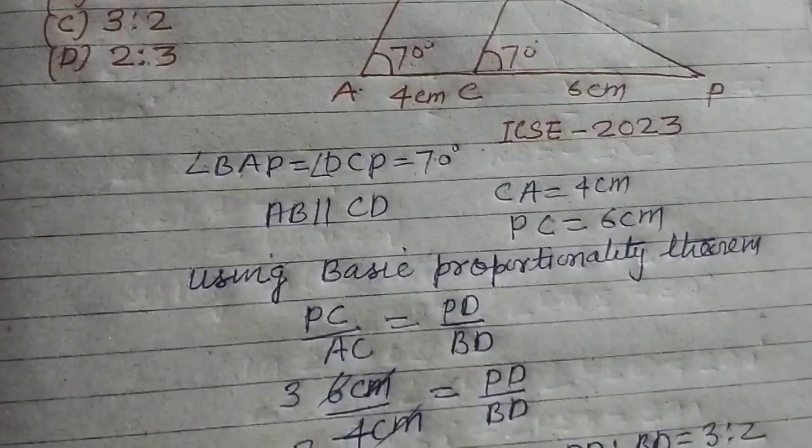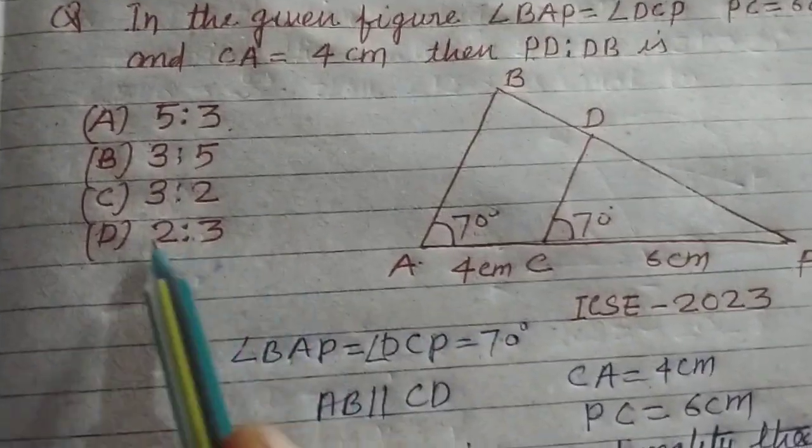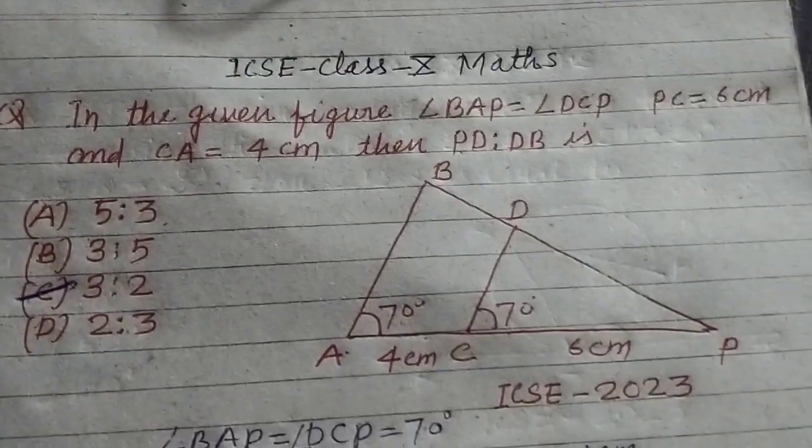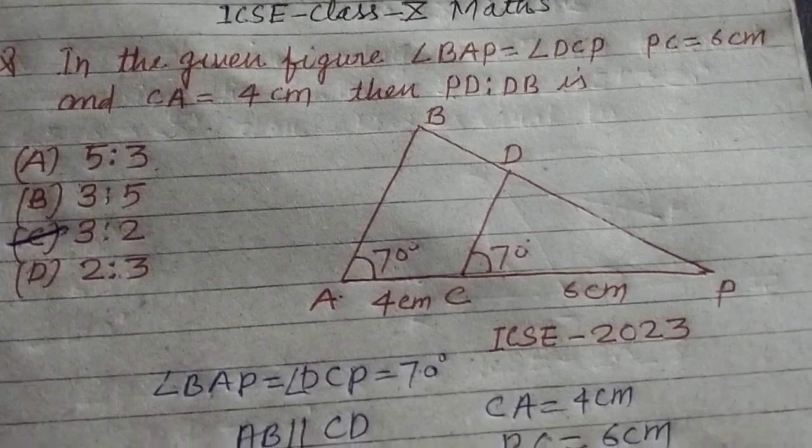So, PD ratio BD is 3 ratio 2 which is found in option C of this question. Students, in this way we solve this problem. I hope you got it.